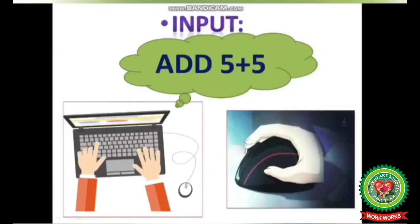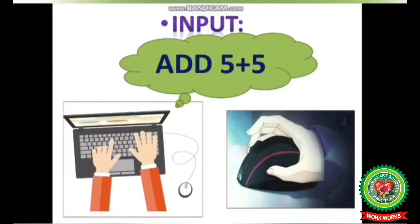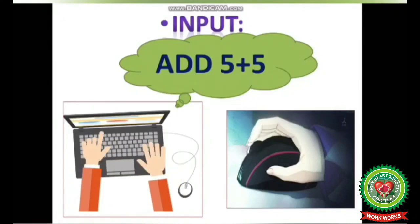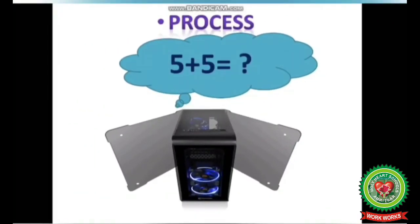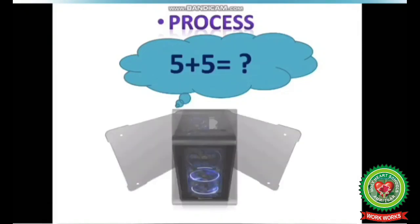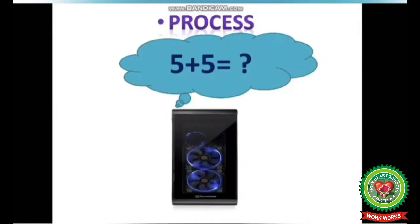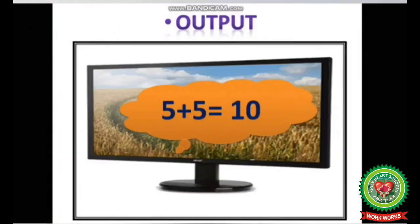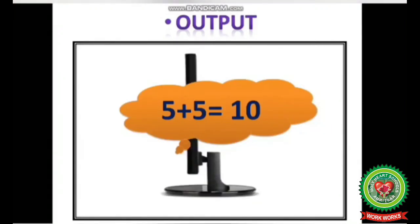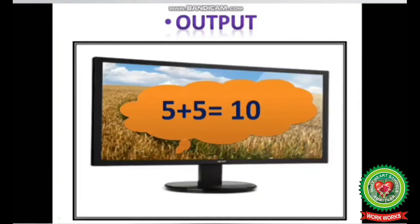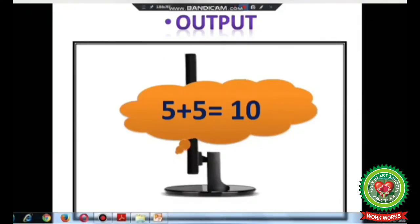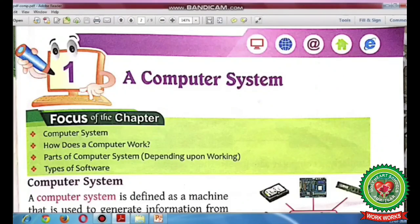For example, we give instructions to the computer using keyboard and mouse to add two numbers: 5 plus 5. The CPU will process your instruction — it will add 5 plus 5 — and after processing, it will give back the result on the monitor: 5 plus 5 is equal to 10. In this way, a computer system works on the IPO cycle to solve different problems.